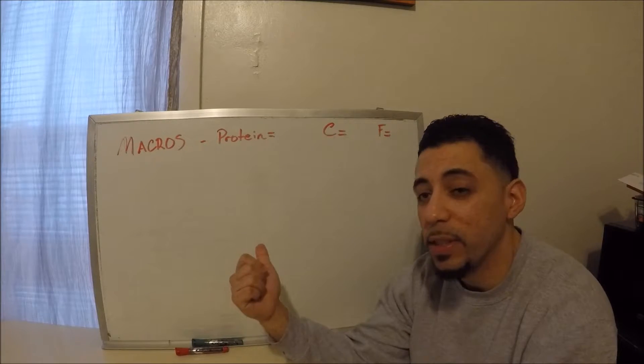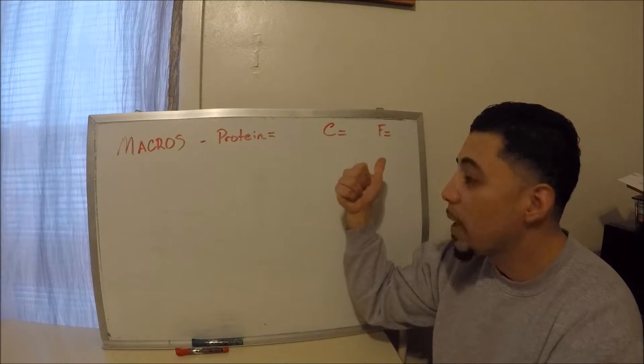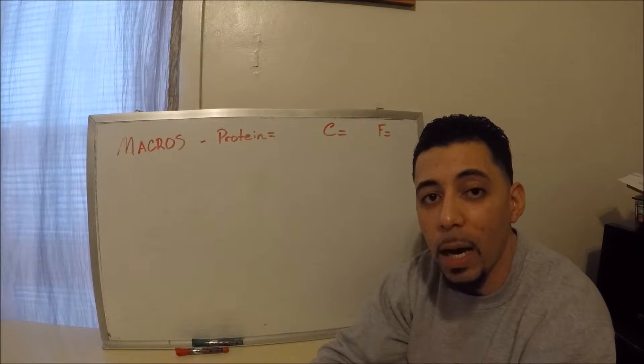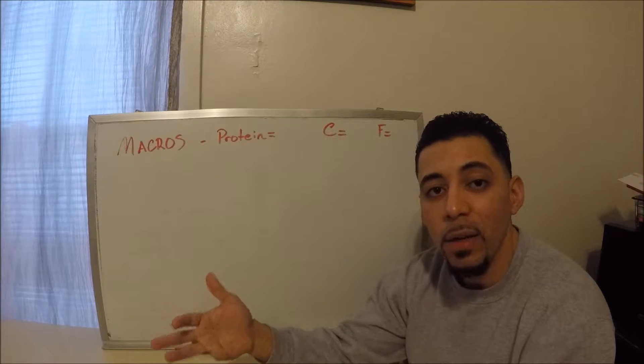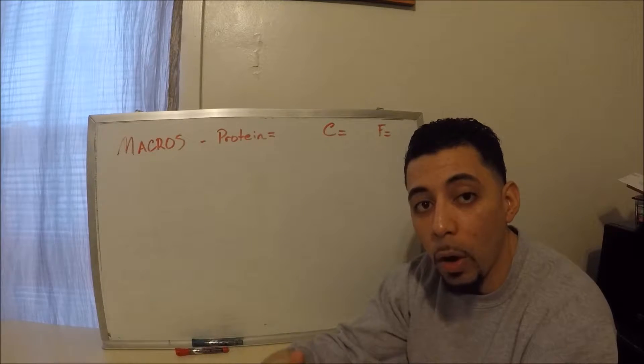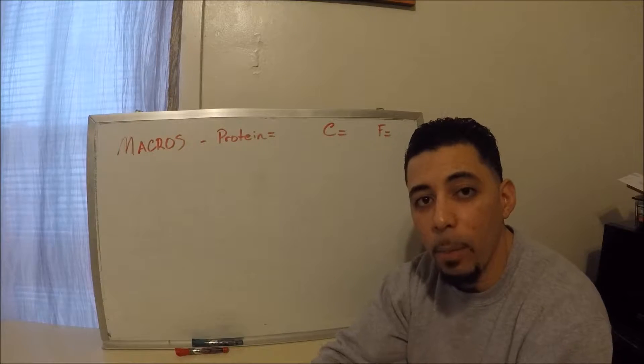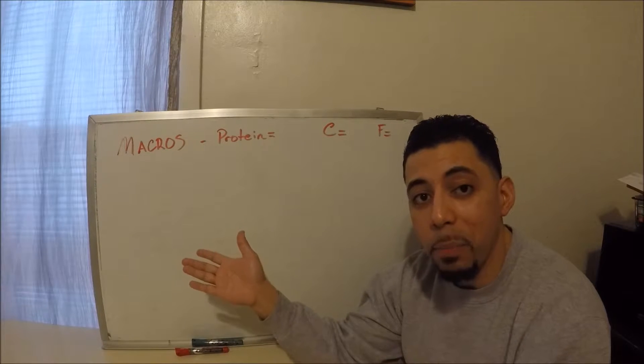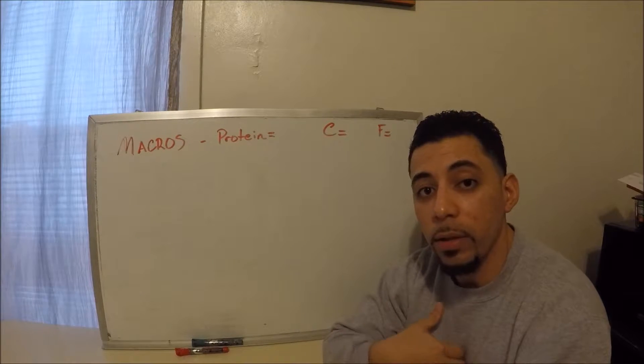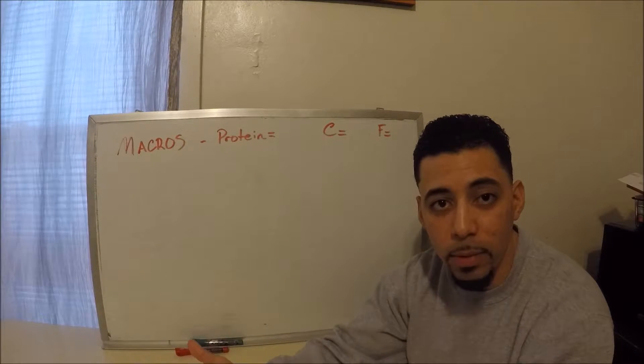Alright, so as you can see here we have P for protein, C for carbs, and F for fat. I just use bodybuilding.com. They have a free macro calculator. You just plug in your information: age, height, weight, and your desired either weight loss, muscle gains, or if you want to maintain. It gives you a baseline of what your macros should be. I'm going to go ahead and plug in my macros here and use the example that Brenda asked for, for a breakfast item that we talked about.